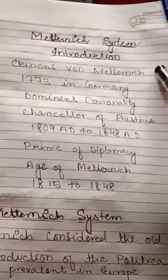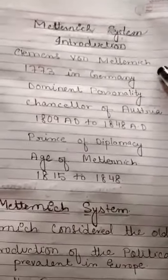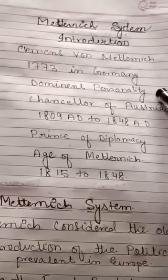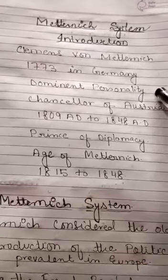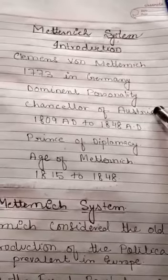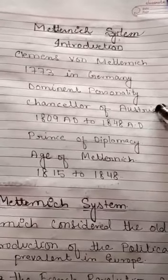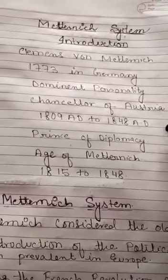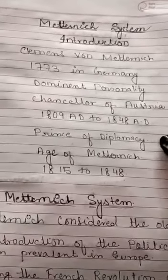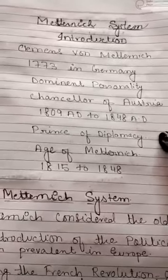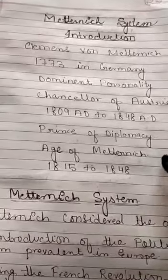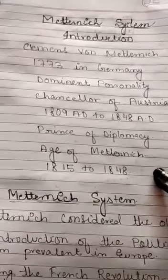Metternich's full name was Clement von Metternich. He was born in 1773 in Germany. He was one of the dominant personalities of contemporary Europe. Metternich was the Chancellor of Austria for a span of 40 years, from 1809 to 1848. Among diplomats, he was known as the Prince of Diplomacy. Fischer, a historian, calls the period from 1815 to 1848 as the Age of Metternich.